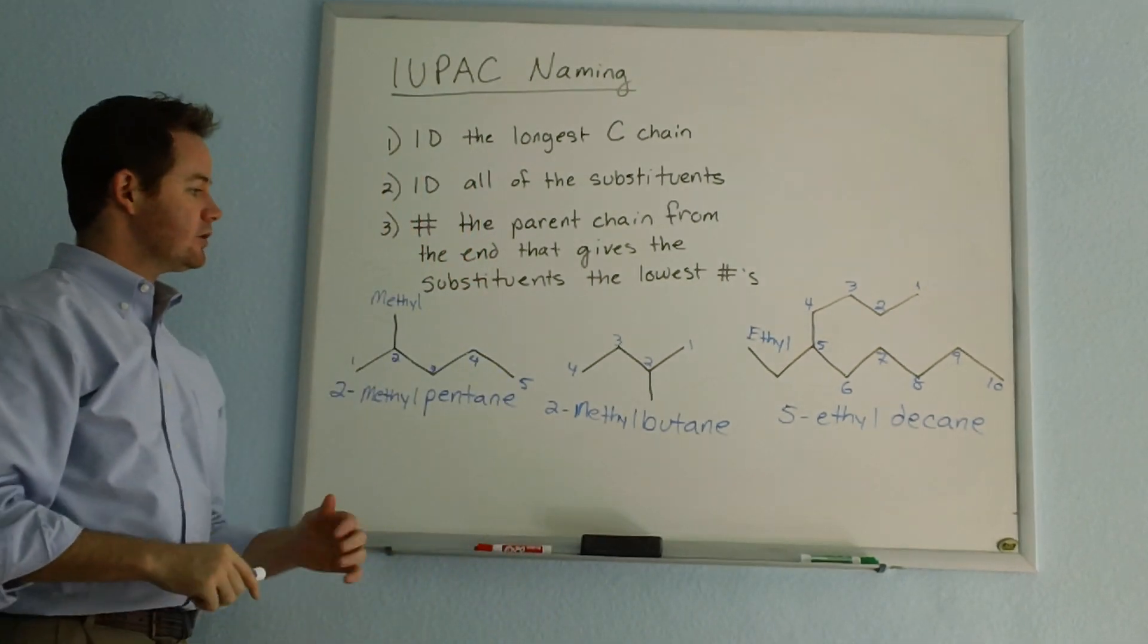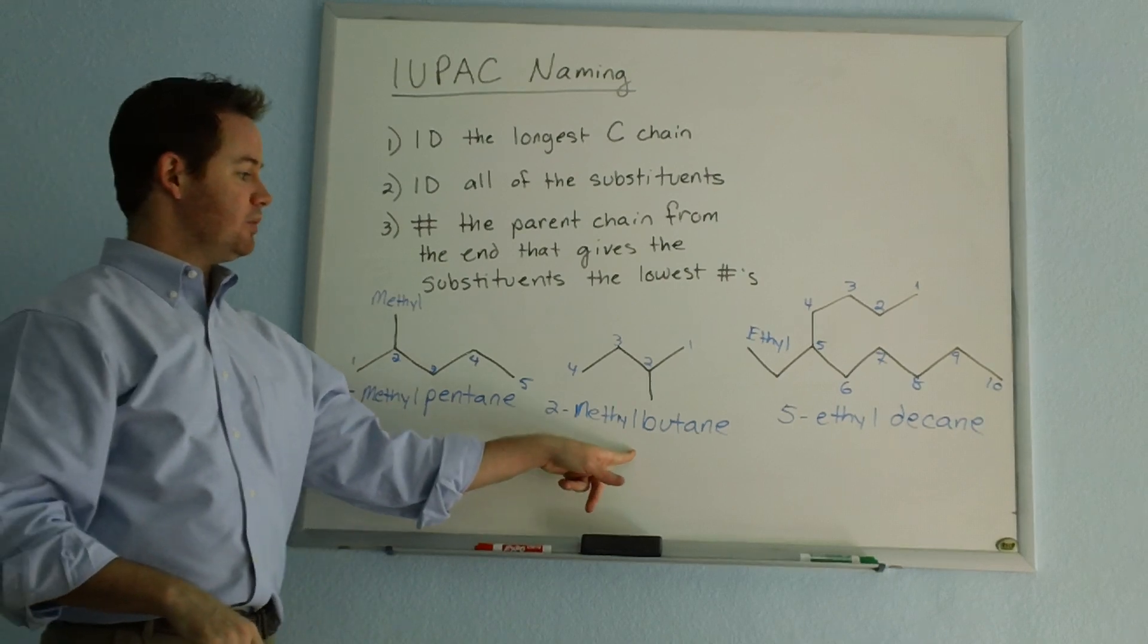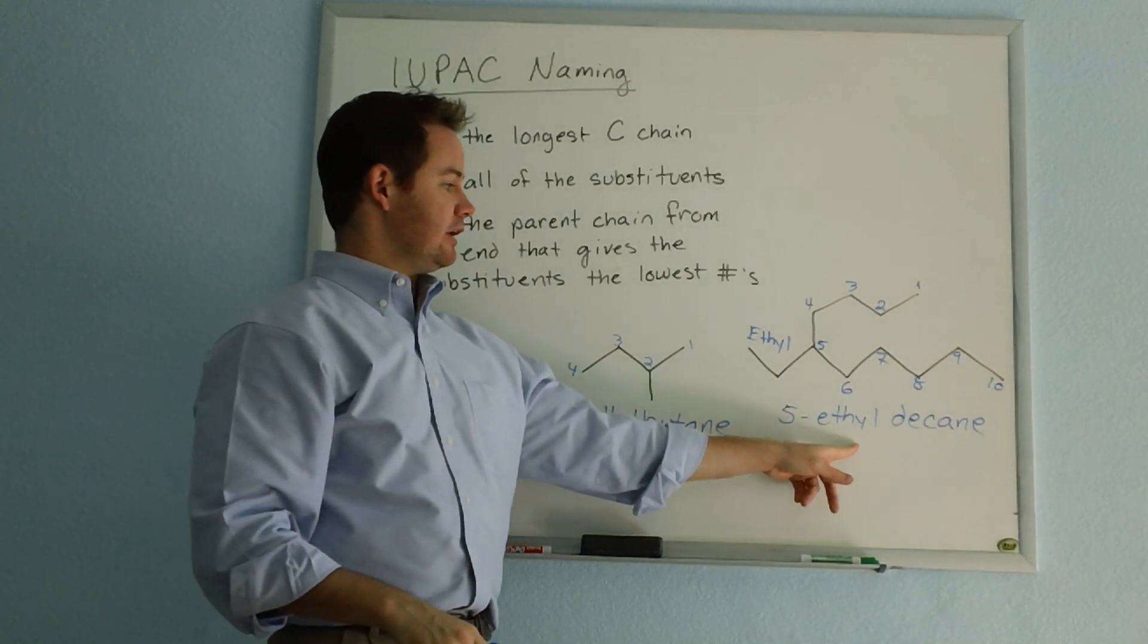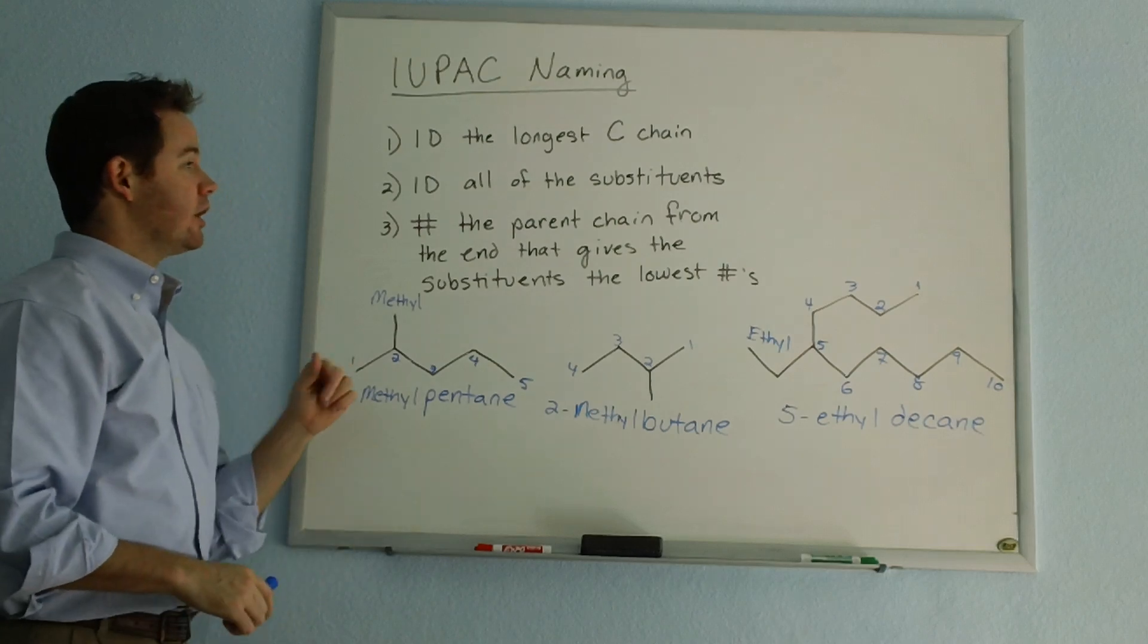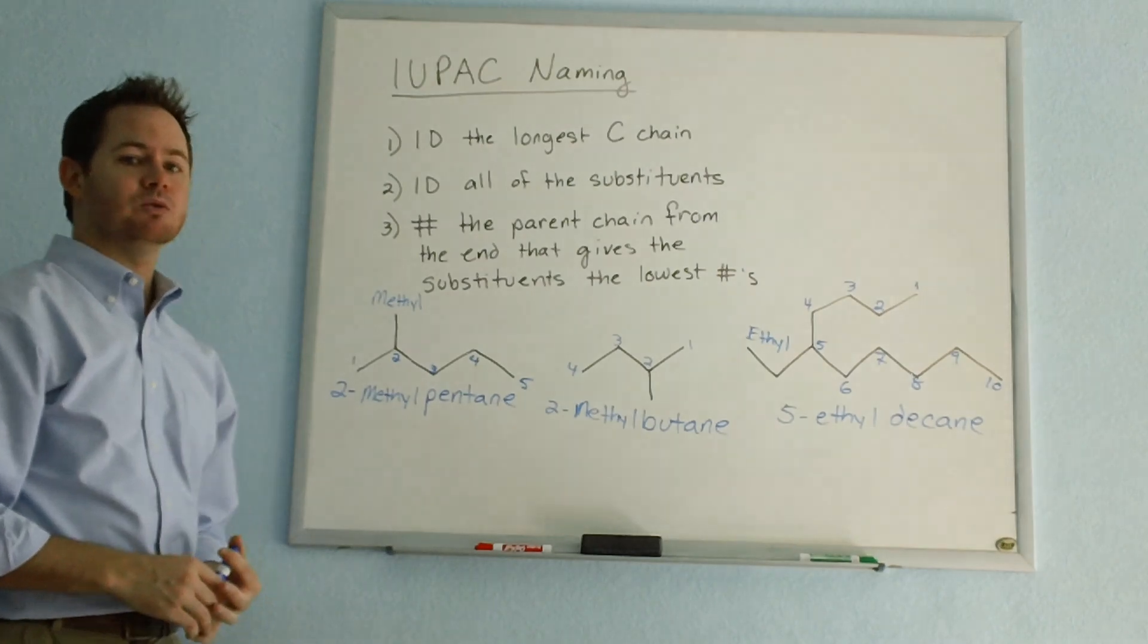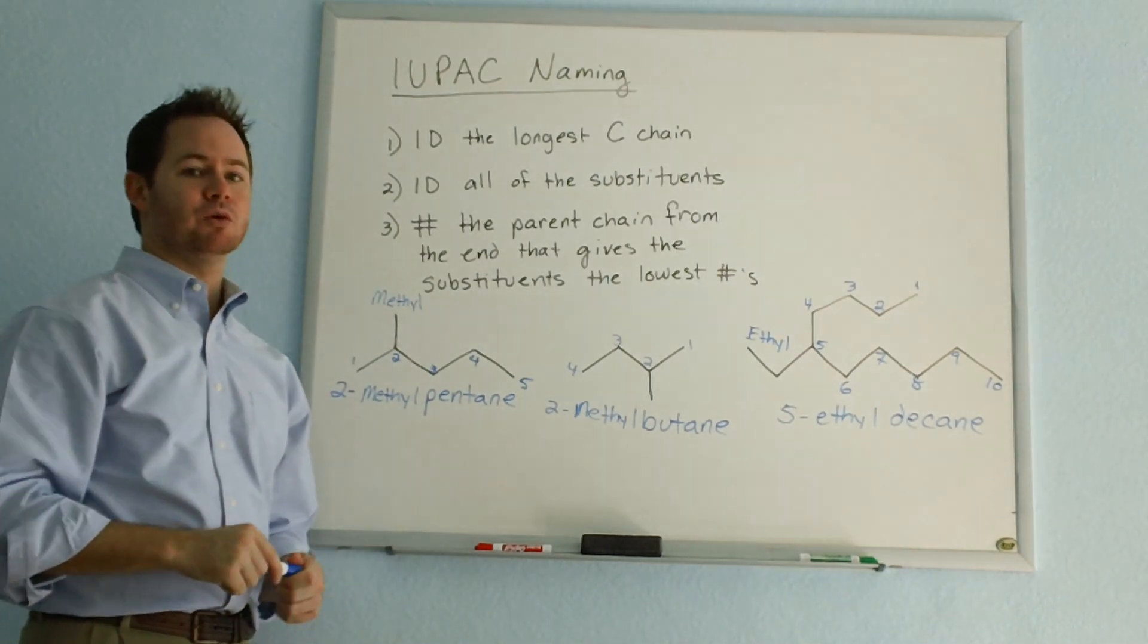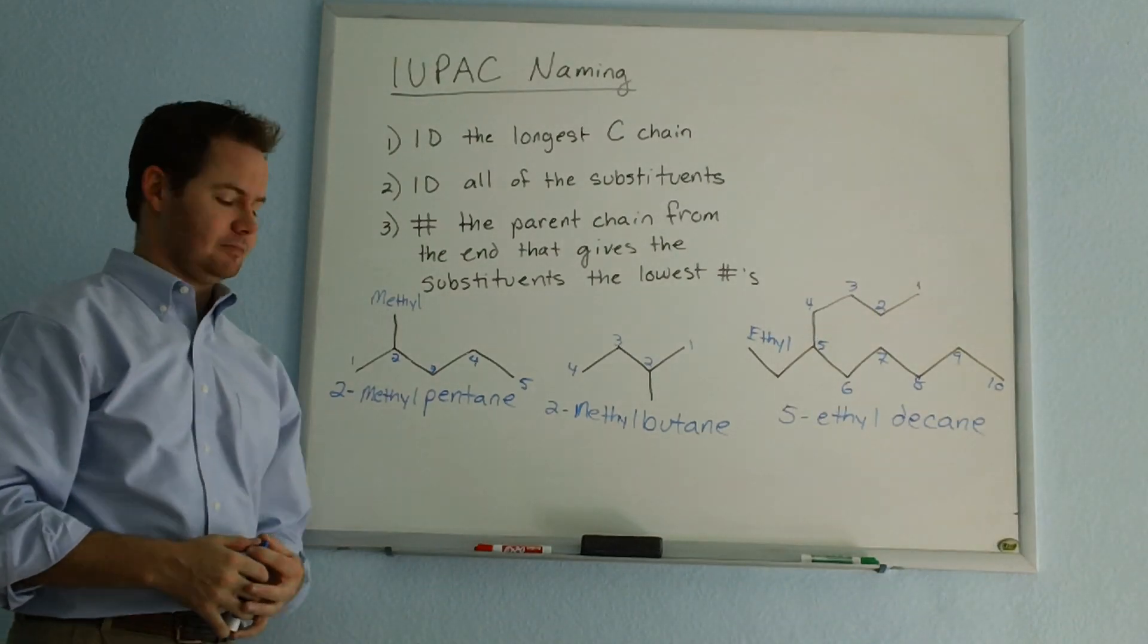So to review these three compounds, 2-methylpentane, 2-methylbutane, and 5-ethyldecane, would be what we come up with using our IUPAC name. Stay tuned for more videos where we will go over further rules for coming up with our IUPAC names.